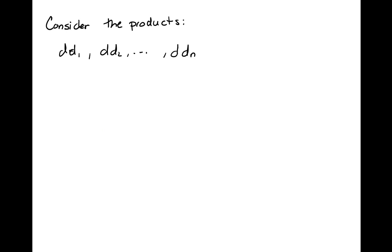So what I'm going to do is a little trick. I'm going to consider the products d times the first element, d times the second element, and so forth, so I have n products. I claim that all these products are distinct, that means none of them are equal.